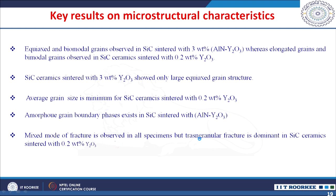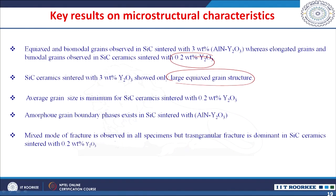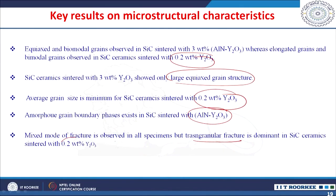Summarizing the microstructural characteristics: equiaxed and bimodal grains are found in silicon carbide sintered with 3% aluminum nitride and yttrium oxide, whereas elongated and bimodal grains are observed in ceramics sintered with 0.2% yttrium oxide. Silicon carbide sintered with 3% yttrium oxide showed only large equiaxed grain structure, with the minimum average grain size found in ceramics sintered with the smaller amount of yttrium oxide. TEM analysis shows an amorphous grain boundary phase in ceramics processed with aluminum nitride and yttrium oxide additives, and dominantly transgranular fracture in ceramics sintered with smaller amounts of additives.